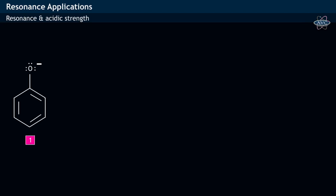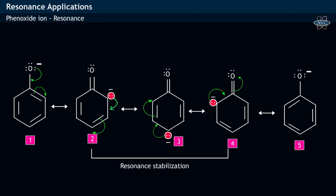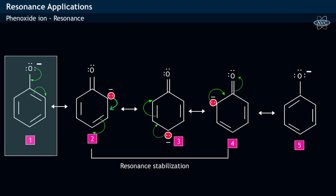In phenoxide ion, since the excess electrons are present on oxygen, it involves in resonance with the benzene ring and results in the formation of resonating structures shown. That is, resonance stabilization occurs in the case of phenoxide ion.